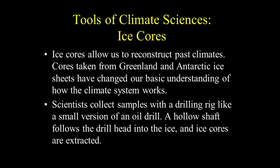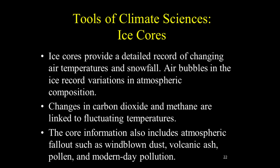Let's now talk about ice cores. Ice cores allow us to reconstruct past climates. Cores taken from Greenland and Antarctic ice sheets have changed our basic understanding of how the climate system works. Scientists collect samples with a drilling rig, like a small version of an oil drill. A hollow shaft follows the drill head into the ice, and ice cores are extracted. Ice cores provide a detailed record of changing air temperatures and snowfall. Air bubbles in the ice record variations in atmospheric composition, and changes in carbon dioxide and methane are linked to fluctuating temperatures.